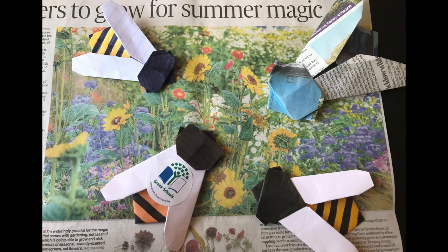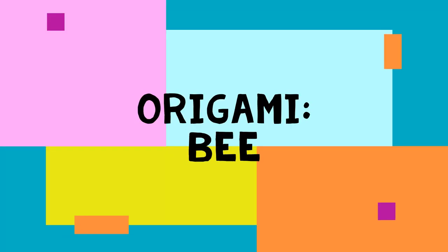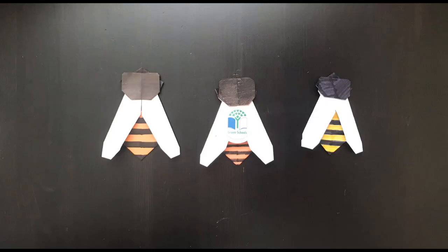Hi, I'm Alison, your Green Schools Officer. Today we are going to make origami bees, but before we get folding, let's see what a bee is up to outside.